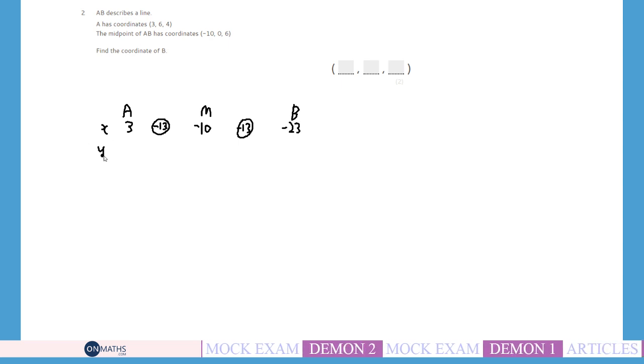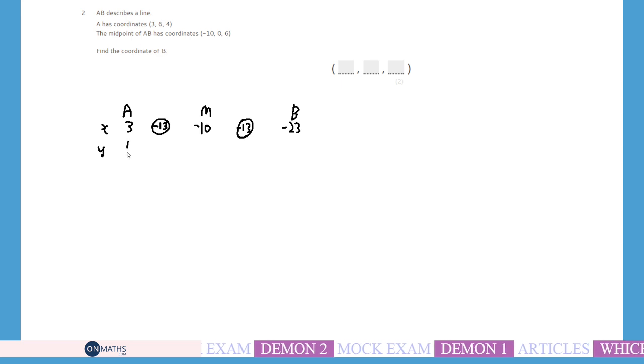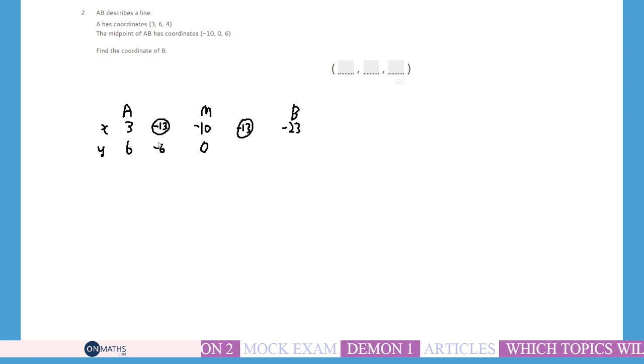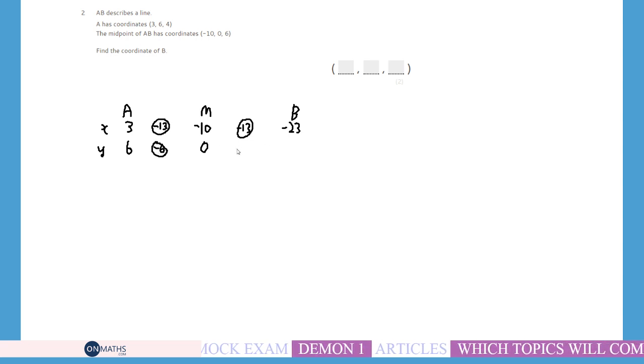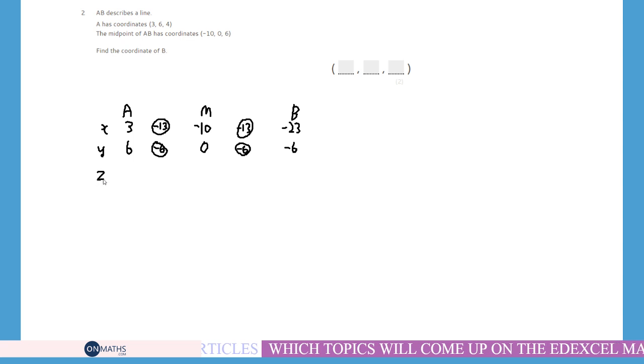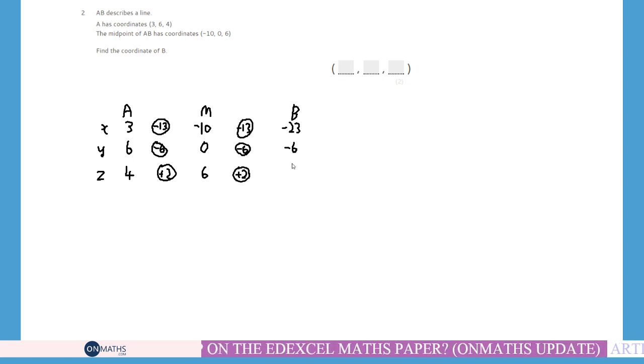And then we do the same with the Y. The Y is 6 at A and it's 0 at M, so we've taken away 6. And then to get to B we're going to do the same thing, because this is the midpoint, the halfway point. So it's got to do the same thing again to get to B. So that's going to be minus 6. And then Z is just going to be exactly the same process. The Z value at A is 4. At M is 6, so this time it's gone up 2. And it's going to do exactly the same thing to get to B. Up another 2 which would be 8.